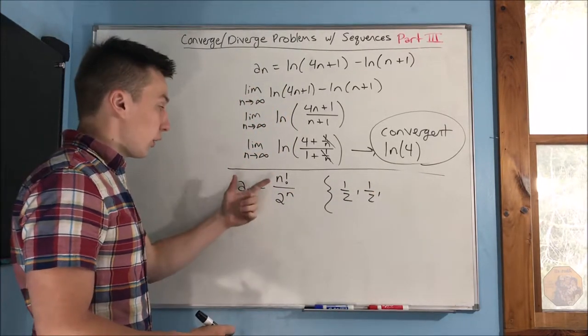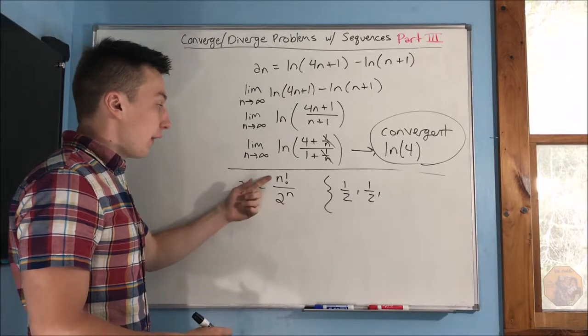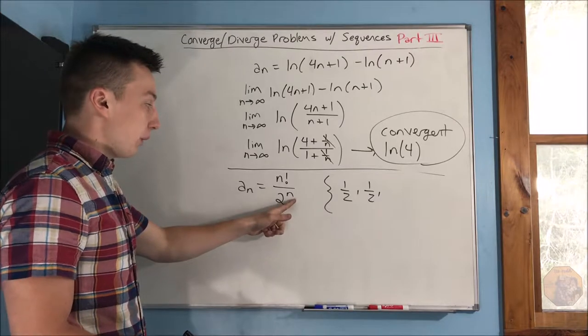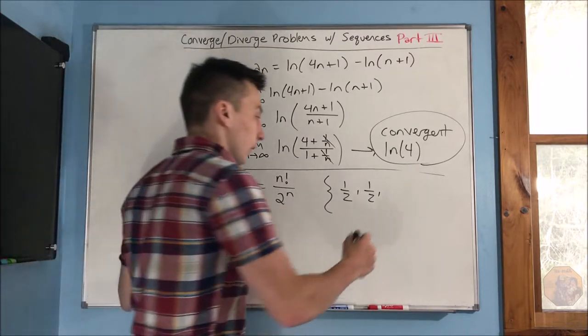Now, 3 factorial, you do a_3. 3 factorial, that's going to be 6. And you're going to get over 2 to the third power, which is going to be 8. So, you're going to get 6 over 8.